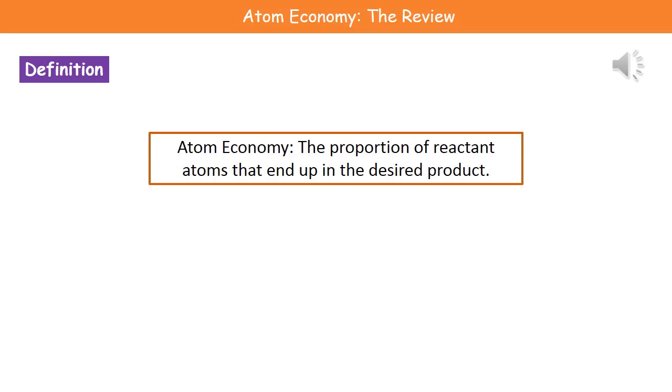What we've got here is the definition for atom economy. Quite simply, it's the proportion of reactant atoms that end up in our desired product. When we're looking at our chemical equation, it's just the ones that have become the product we wanted to make compared to the number of reactant atoms we started with.